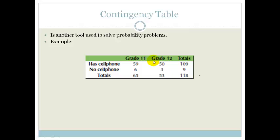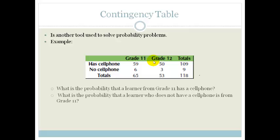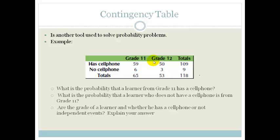Let's look at the questions. First: what is the probability that a learner from grade 11 has a cell phone? Second: what is the probability that a learner who does not have a cell phone is from grade 11? And finally: are the grade of the learner and whether they have a cell phone or not independent events? They want you to explain your answer — in other words, not just yes or no, you need to do the calculation.